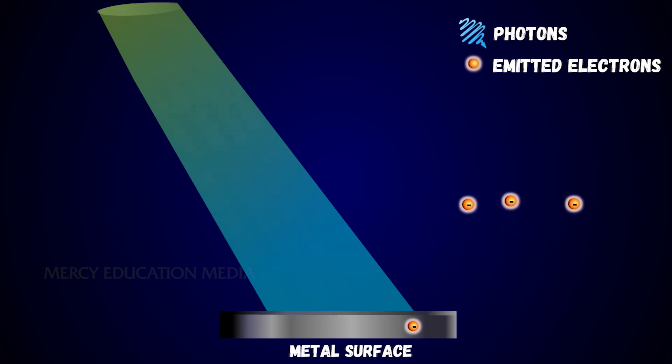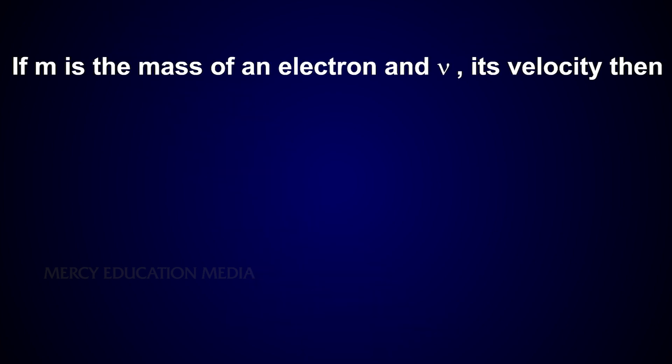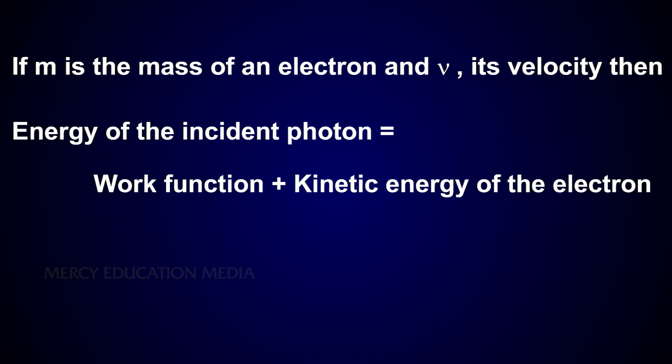The remaining energy of the photon is used to impart kinetic energy to the liberated electron. If m is the mass of the electron and v its velocity, then the energy of the incident photon is equal to the work function plus the kinetic energy of the electron.